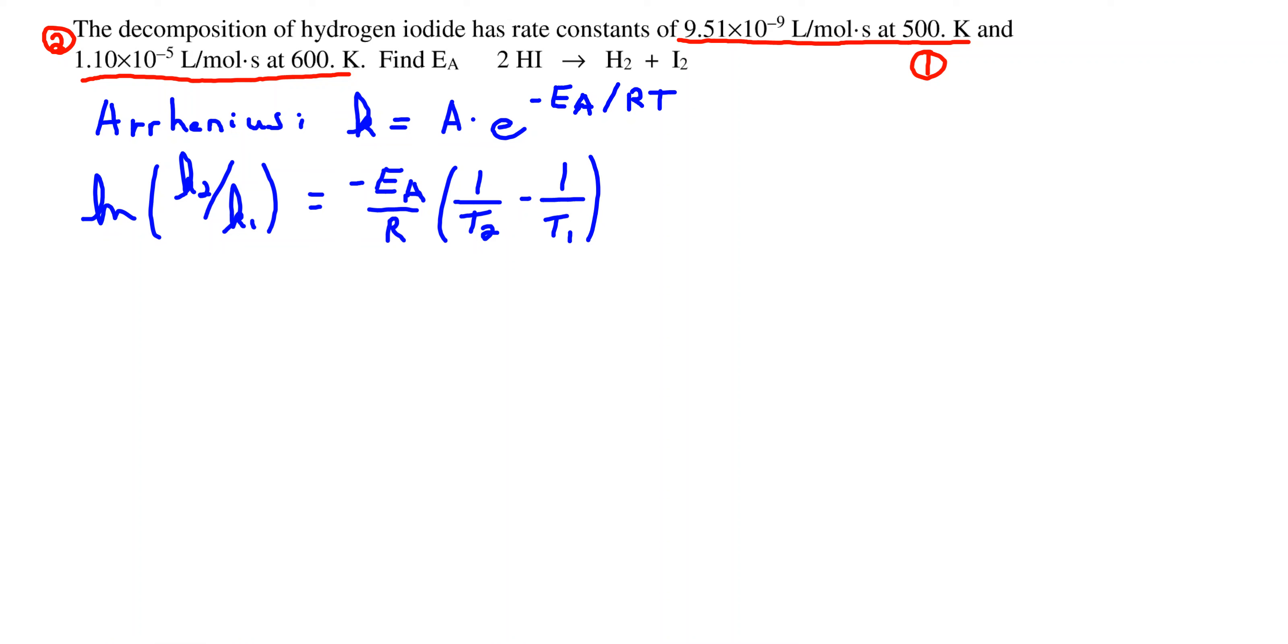All right, the Arrhenius equation allows us to relate our rate constant k to the activation energy and temperature. If we're looking at two different temperatures, one and two, we can rewrite the Arrhenius equation relating these two conditions.